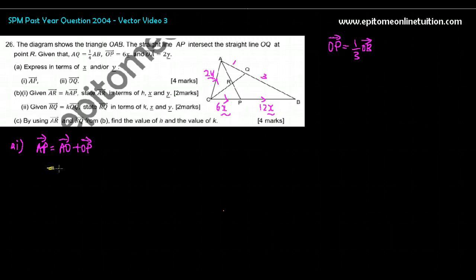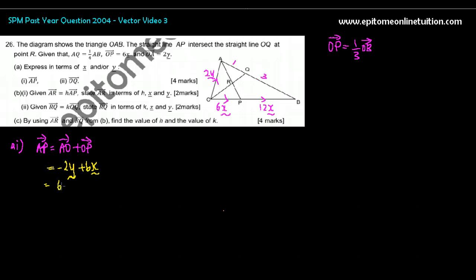So AO is negative 2Y plus 6X. Let's write it nicely: 6X minus 2Y. So that's A1, right?